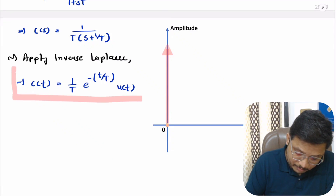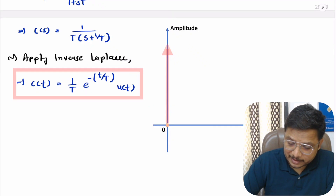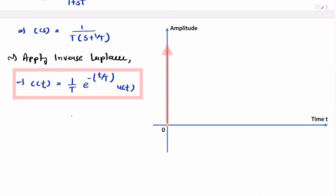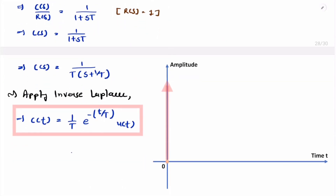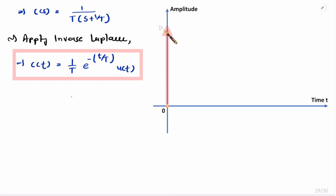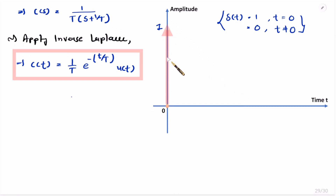Now let me explain this output graphically. We have amplitude on the vertical axis and time on the horizontal axis. The input is a unit impulse signal — graphically the impulse signal delta(t) equals 1 at t equals 0 and equals 0 for t not equal to 0. For the output, at time t equals 0, e to the power 0 is 1, so the output starts at 1/T.